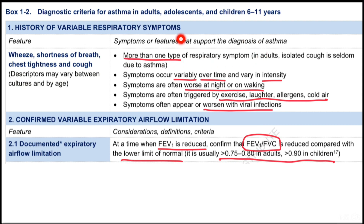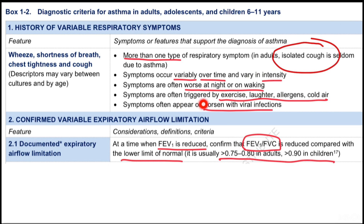Symptoms should occur variably over time and with intensity, should worsen at night and during morning wake-up, and are often triggered by exercise, laughter, allergen, or cold air. Symptoms often appear or worsen with viral infections. The second criterion is confirmed variable expiratory airflow limitation, including documented expiratory airflow limitation where FEV1 is reduced and the FEV1/FVC ratio is less than 0.75–0.8 in adults and more than 0.9 in children.